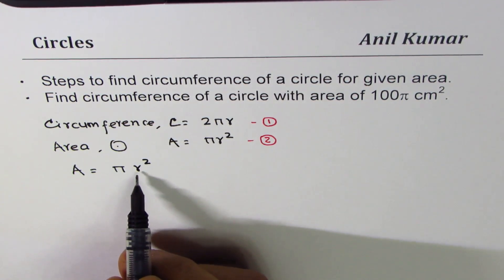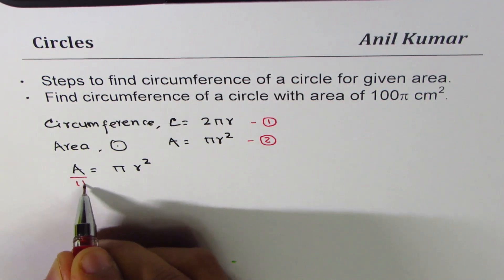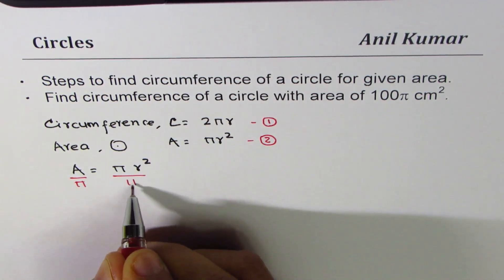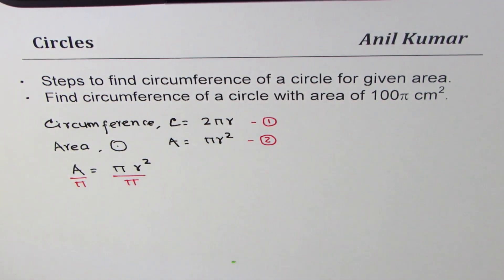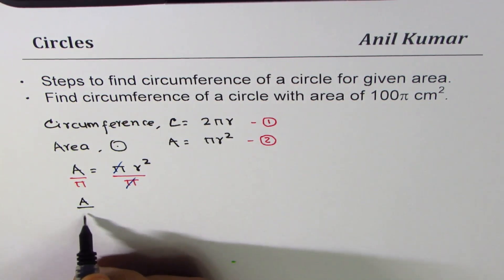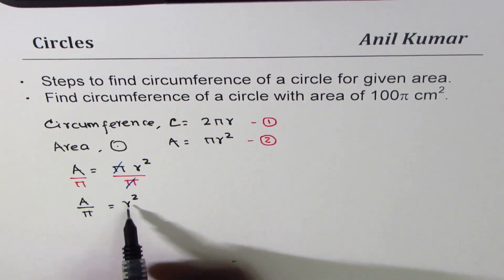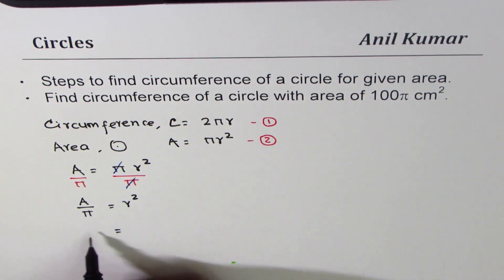If I have to isolate r, first step should be divide both sides by π, right? Divide both sides by π. Then this π gets cancelled. This π gets cancelled and we can write area divided by π is equal to square of radius. So what is radius? Radius is square root of area divided by π. Perfect.